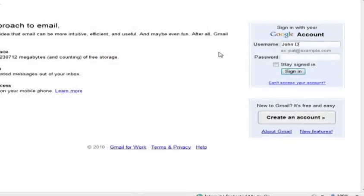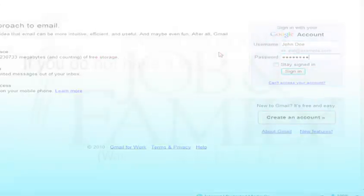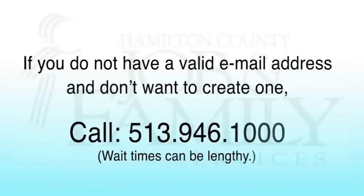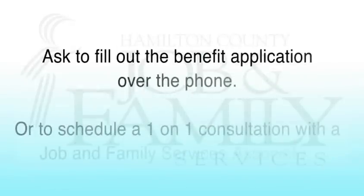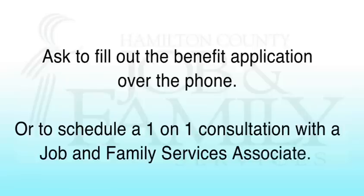That's it. You now have an email account and can communicate with anyone else who has one. If you do not have a valid email address and you don't want to create one, call 513-946-1000 and ask to fill out the benefit application over the phone or to schedule a one-on-one consultation with a job and family services associate.